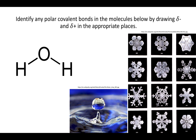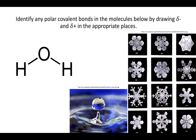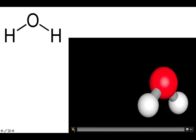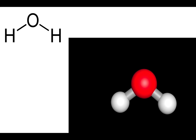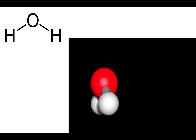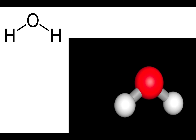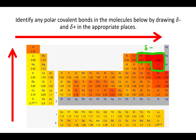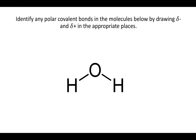Let's identify any polar covalent bonds in the molecule below by drawing delta minus and delta plus in the appropriate places — here we're dealing with water. Water looks like this three-dimensionally. First, qualitatively: do we have a nitrogen, oxygen, fluorine, or chlorine in the molecule? We do — we have oxygen, so that oxygen is going to be slightly negative. Anything it's bound to is going to be slightly positive, and there you have the delta plus and delta minuses for water.